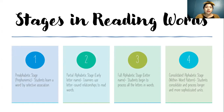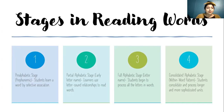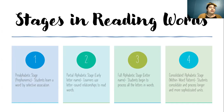The second stage is the partial alphabetic stage, which is the early letter name. Learners use letter-sound relationships to read words — they may use only the first letter of a word and combine the sound of that letter with context. These students store incomplete representations of words, so they can often get confused with words like 'when' and 'went,' or 'is' and 'it.'